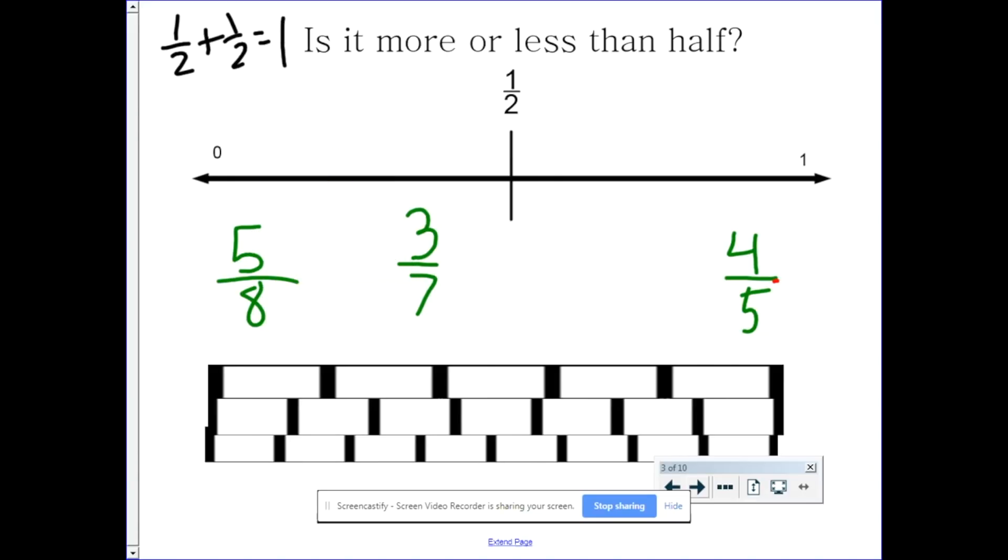We know that one-half plus one-half equals one whole. So if you have a fraction that's less than half, another fraction that's less than half, you know that you're never going to get one whole. Likewise, if they're both greater than half, you're going to get an answer that's greater than one whole.